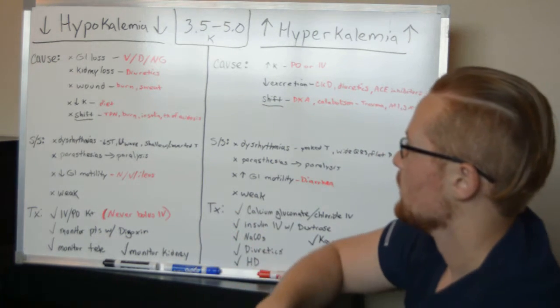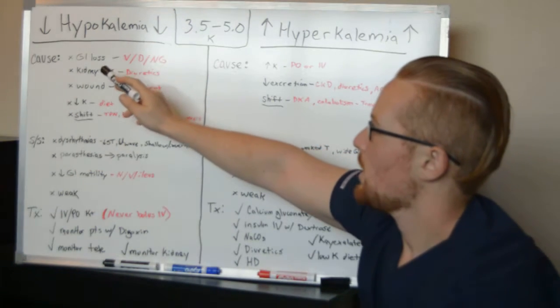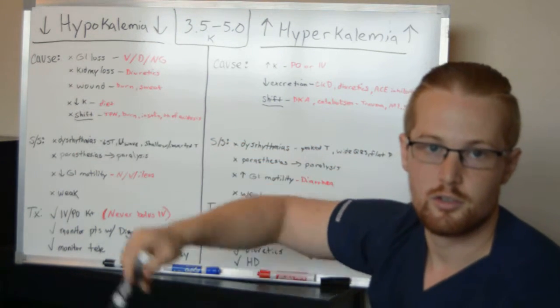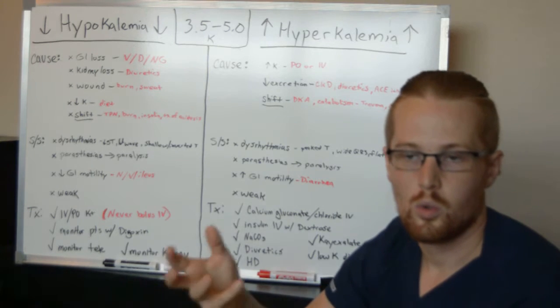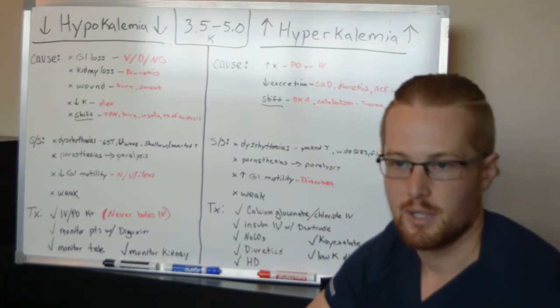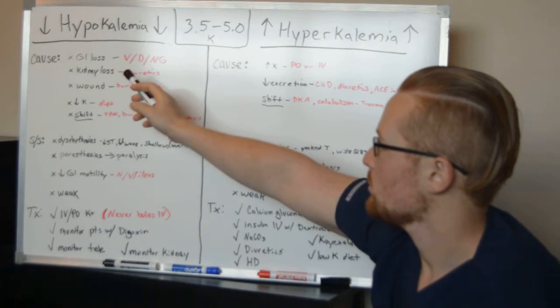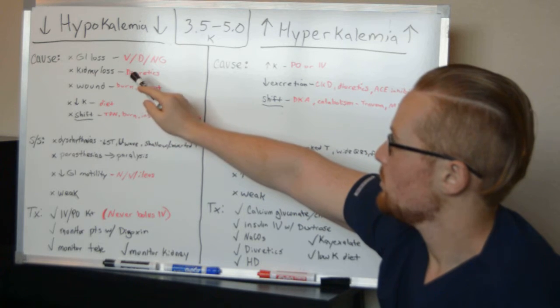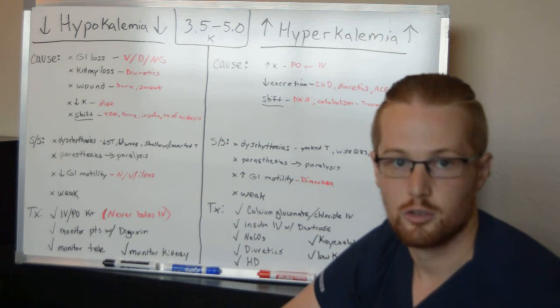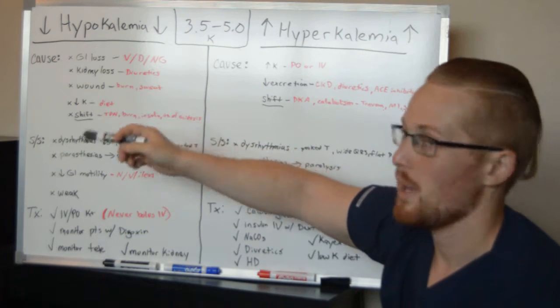So what can cause the potassium to be low? It can be caused by GI losses through vomiting, diarrhea, or NG tubes sucking out the gastric contents because there's a lot of potassium in the gastric contents, in the stomach and in the bowels. You can also lose potassium in diuretics such as loop diuretics. Furosemide, also known as Lasix, is the main example.